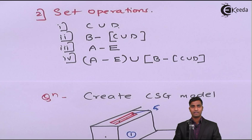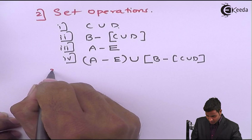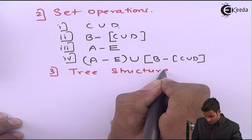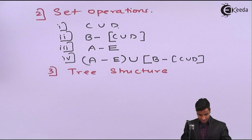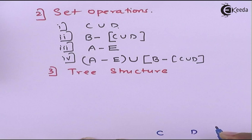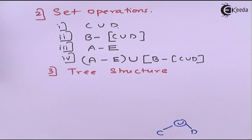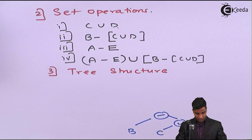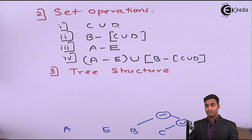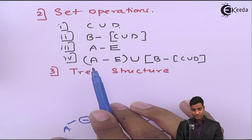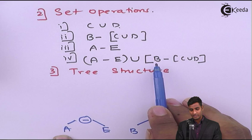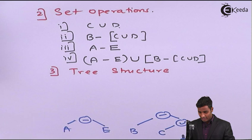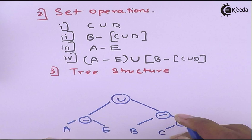Now last is the tree structure. Starting from the simplest: C and D with union operator. Next is B minus C union D. Then A and E with minus operator giving A minus E. Finally, A minus E is union with B minus (C union D). This is the tree structure for this solid geometry. Thank you.